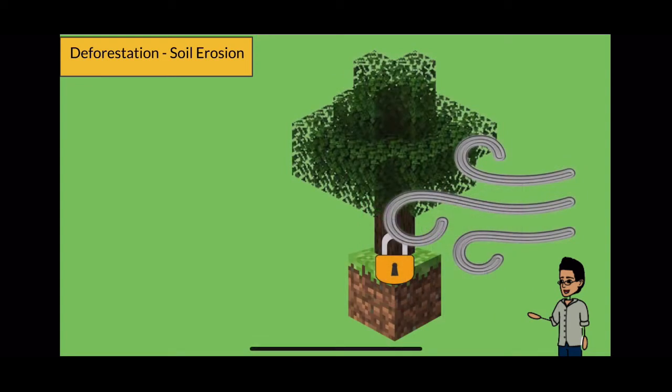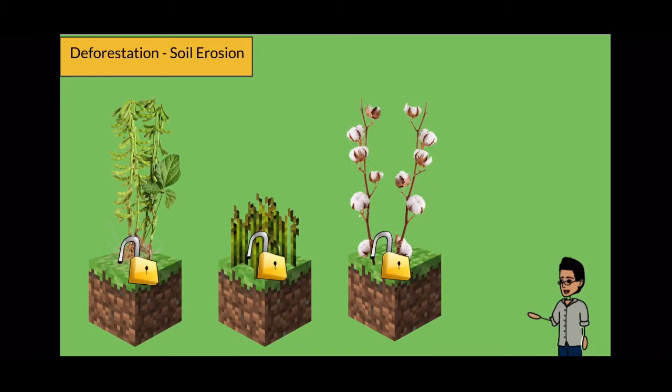To illustrate, try to think of trees as a lock to prevent soil from flying away. Agricultural plants frequently replace lost trees. However, they are unable to hold soil in place.